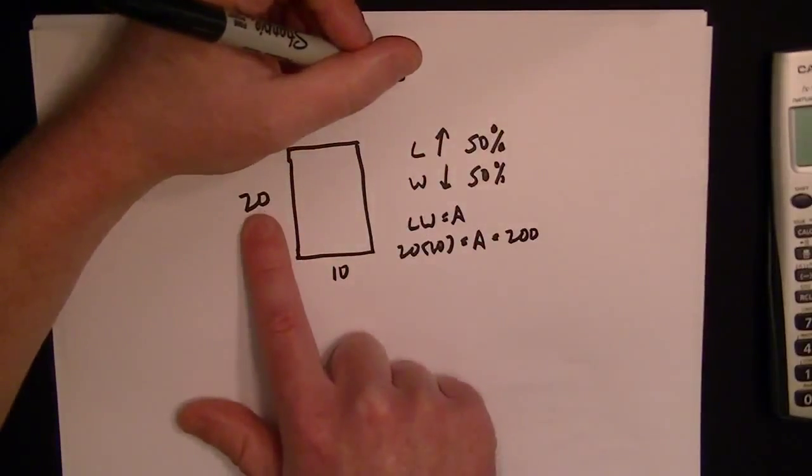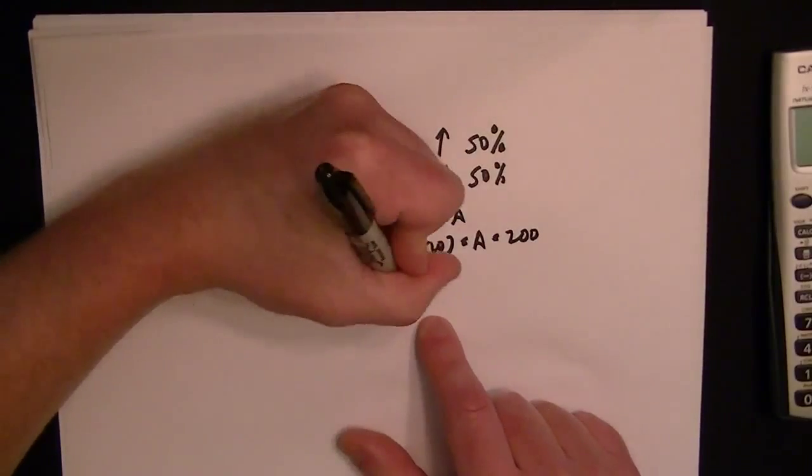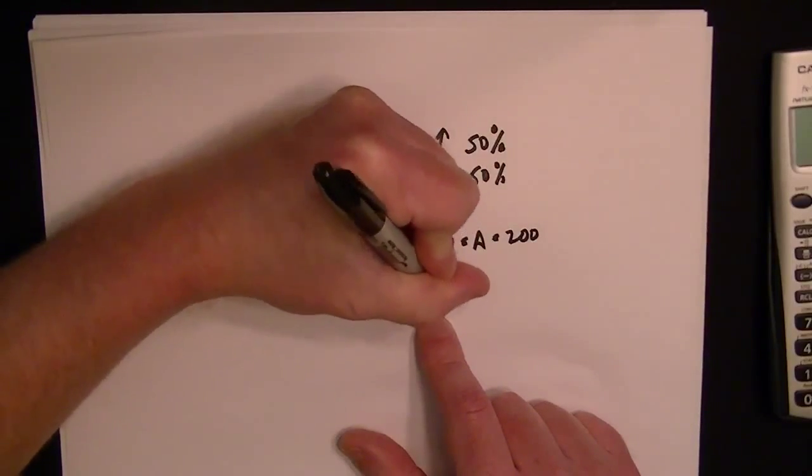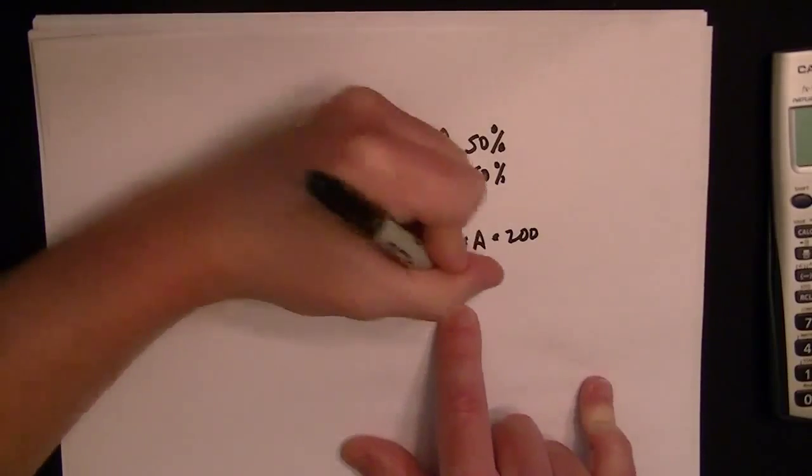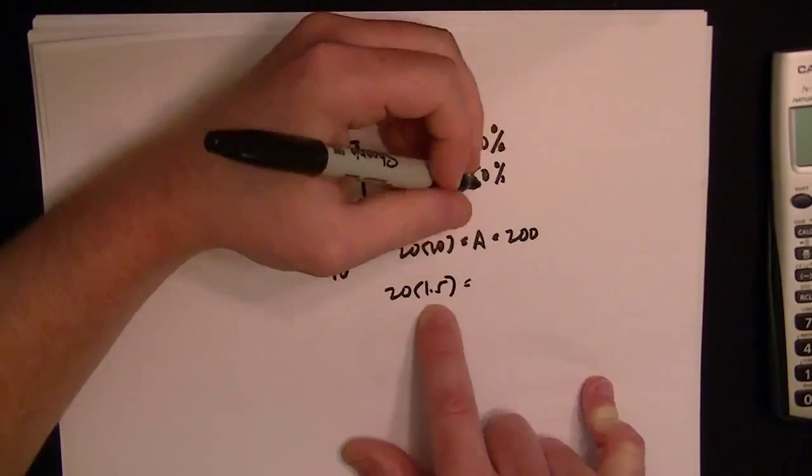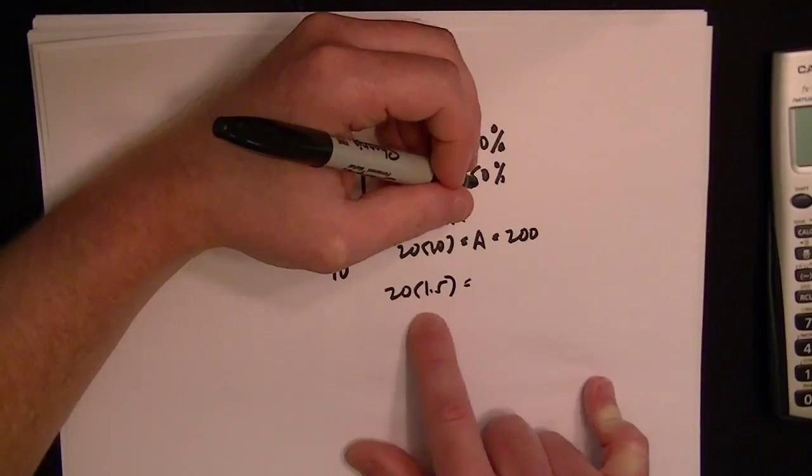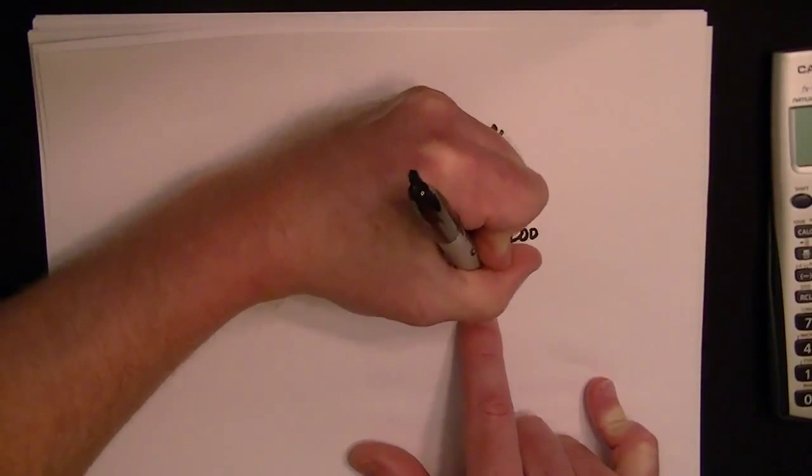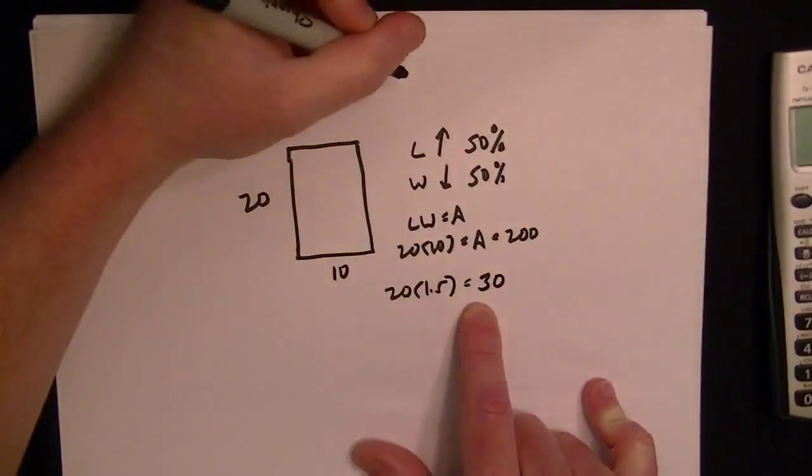Now if this length increases by 50%, that's going to be 20 times 1.5, which is a 50% increase. And 50% of 20 is 10, so if you increase it by 50%, that's 10 plus 20, which gives us 30.